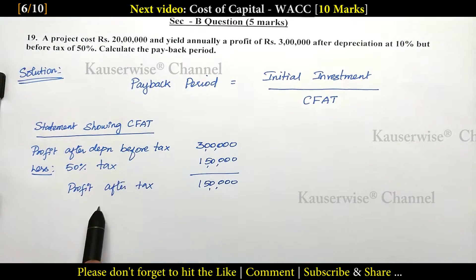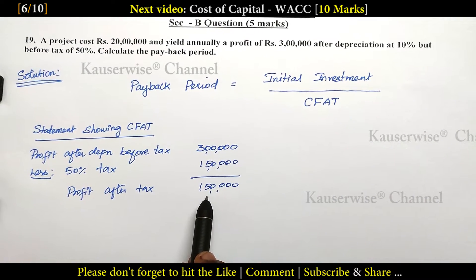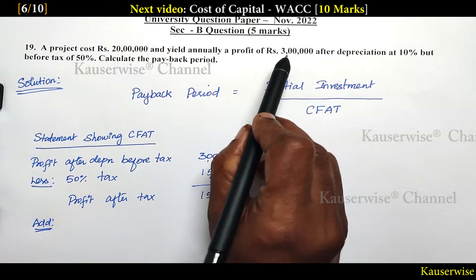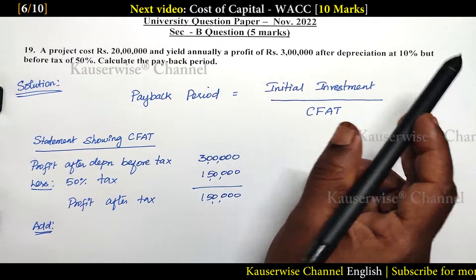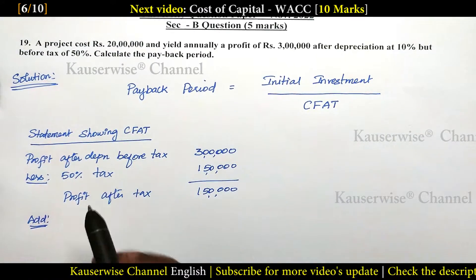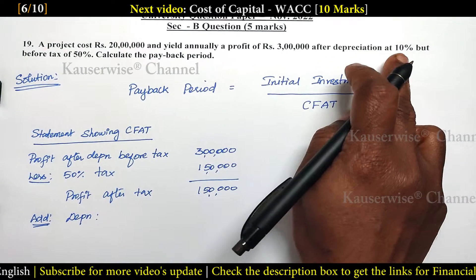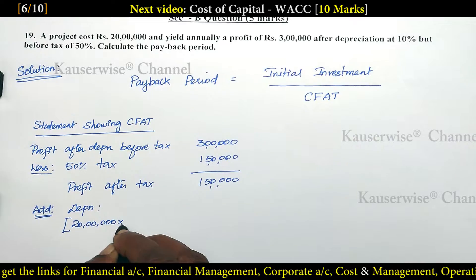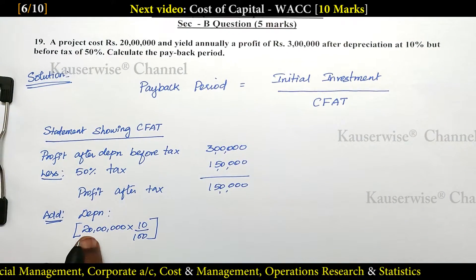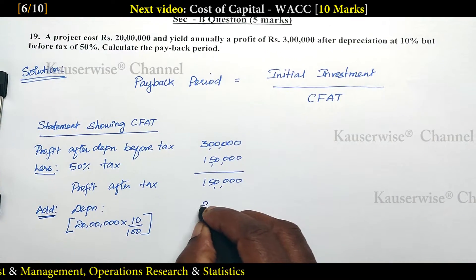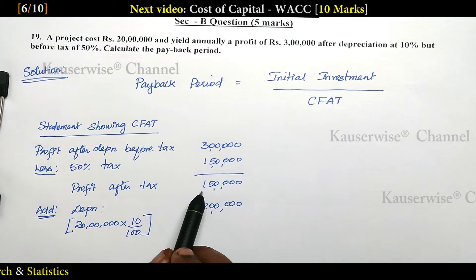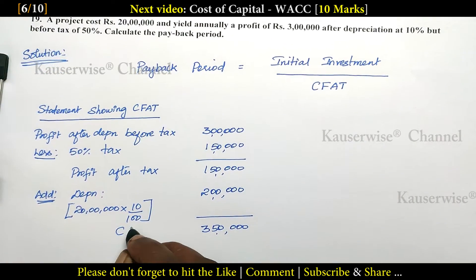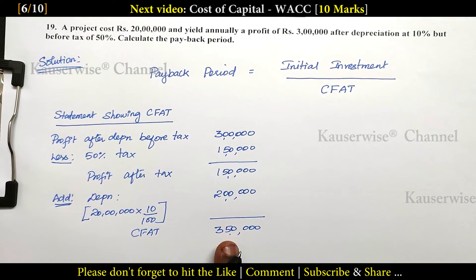CFAT stands for cash flow after tax but before depreciation, so we need to add back the depreciation which was already subtracted. They have given 3 lakhs after depreciation of 10 percentage, so we need to add the depreciation to find out CFAT. Add depreciation: 10 percentage on the original cost, 20 lakhs into 10 percentage equals 2 lakhs. So profit after tax plus depreciation gives a total of 3 lakh 50,000. This is CFAT — cash flow after tax but before depreciation.